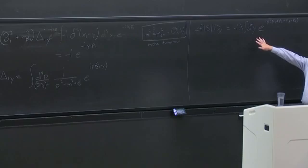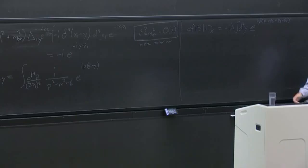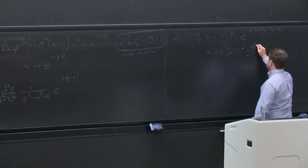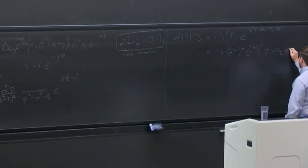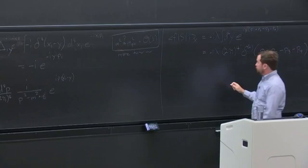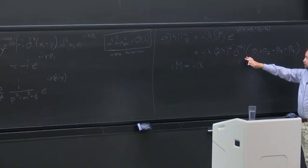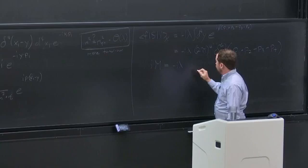We've got one integral left. It's an integral we can do, and it just gives us a delta. So we get minus i lambda times delta, which is exactly the delta we'd expect — the delta that says total four-momentum is conserved. So that tells us the matrix element is minus i lambda. We just factor out this delta, which shows up in all processes.